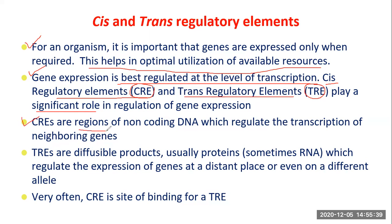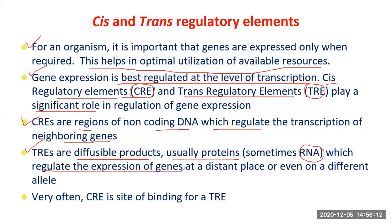CIS regulatory elements are regions of non-coding DNA which regulate the transcription of neighboring genes — genes that are adjacent to them. Trans regulatory elements, on the other hand, work through a diffusible product, which in the majority of cases is a protein, though sometimes it can be RNA, and they regulate the expression of genes located nearby or at a distant place.